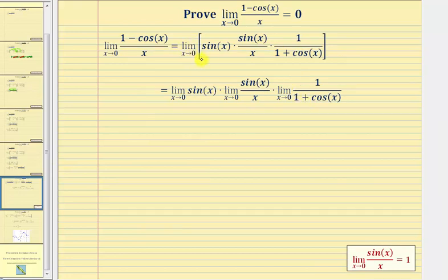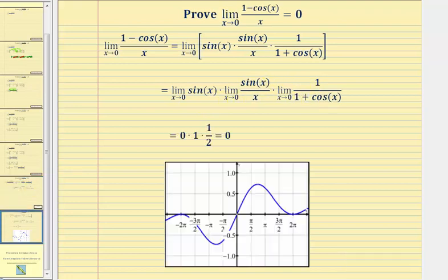The limit as x approaches zero of this product equals the limit as x approaches zero of sine x, times the limit as x approaches zero of sine x divided by x, times the limit as x approaches zero of one divided by the quantity one plus cosine x. The limit as x approaches zero of sine x equals zero by direct substitution. Next, the limit as x approaches zero of sine x divided by x, which we proved in the last video, is equal to one. And the last limit by direct substitution: cosine zero equals one, so the limit is one over the quantity one plus one, or one half.